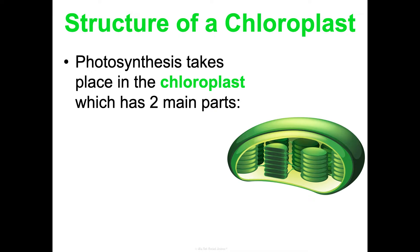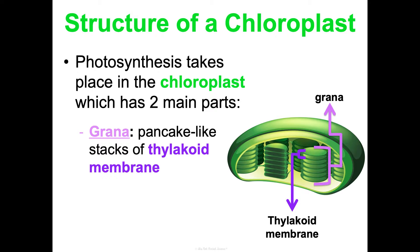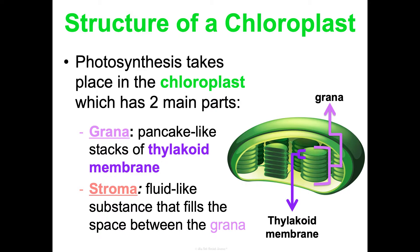All of this is going down in the chloroplast, which is a special organelle that plants have. It has two main parts, which correspond to the two steps of photosynthesis. The grana — to me, that looks like a stack of pancakes — is a pancake-like stack of thylakoid membranes. Each individual pancake-looking thing is a thylakoid membrane; the whole stack is the grana. The stroma is the fluid-like part, all the space in between — I think of that as the syrup. The first step happens in the grana and the second in the stroma.